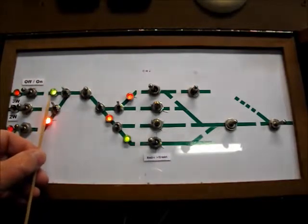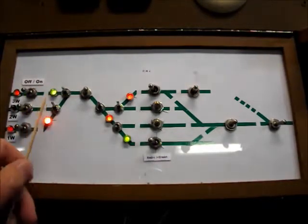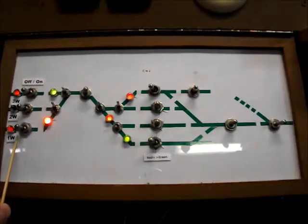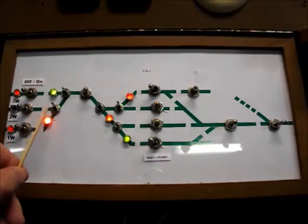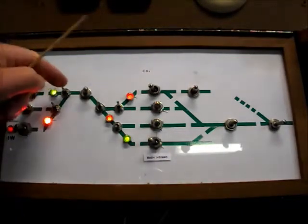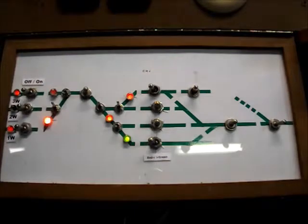The three storage tracks on the western end, tracks 1W, 2W, and 3W, are also controlled by tortoises and these are the indicators for those turnouts.